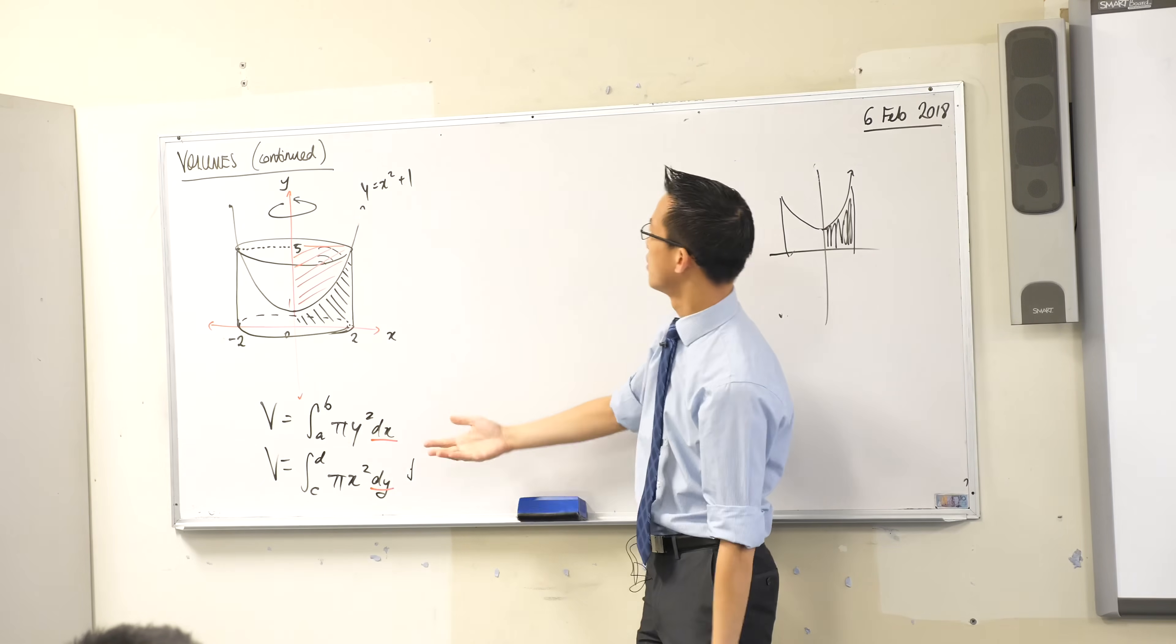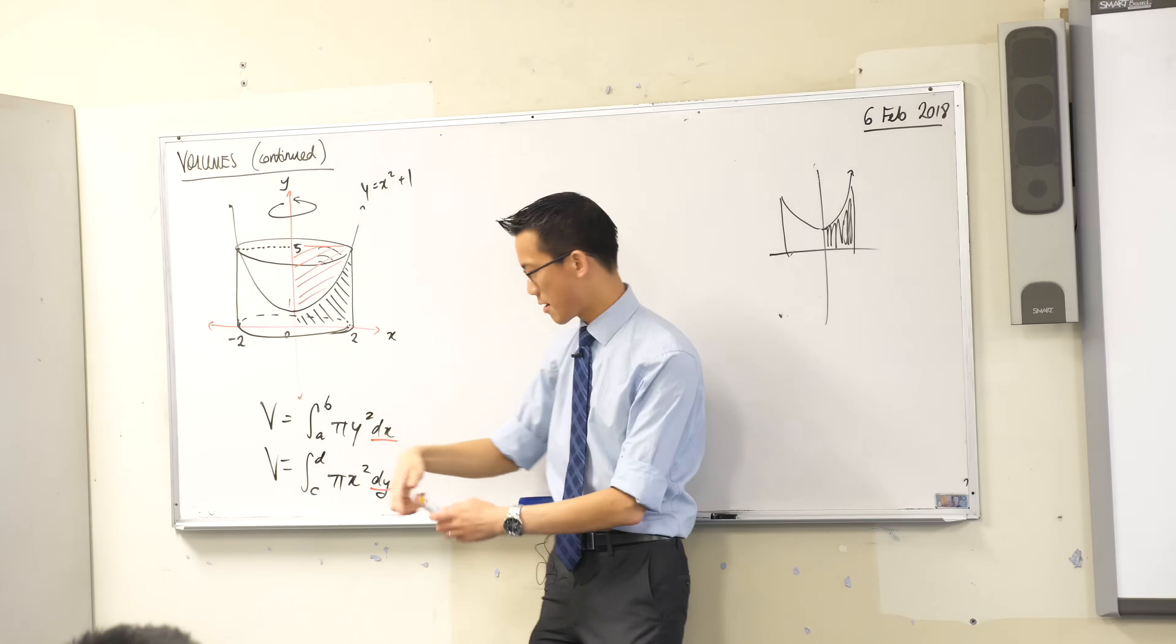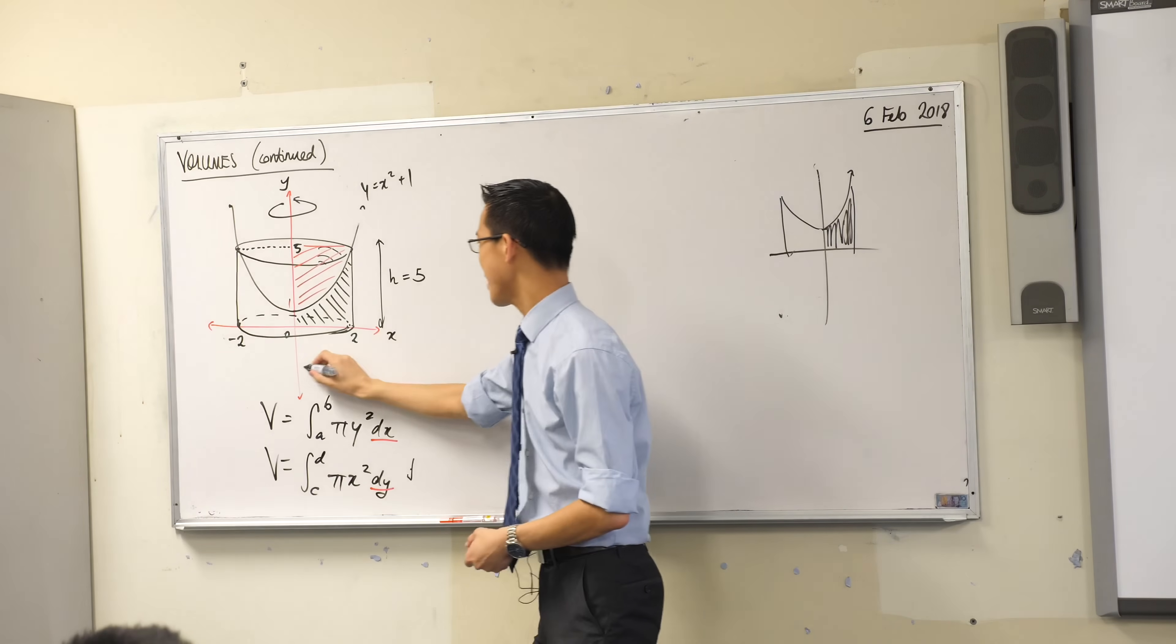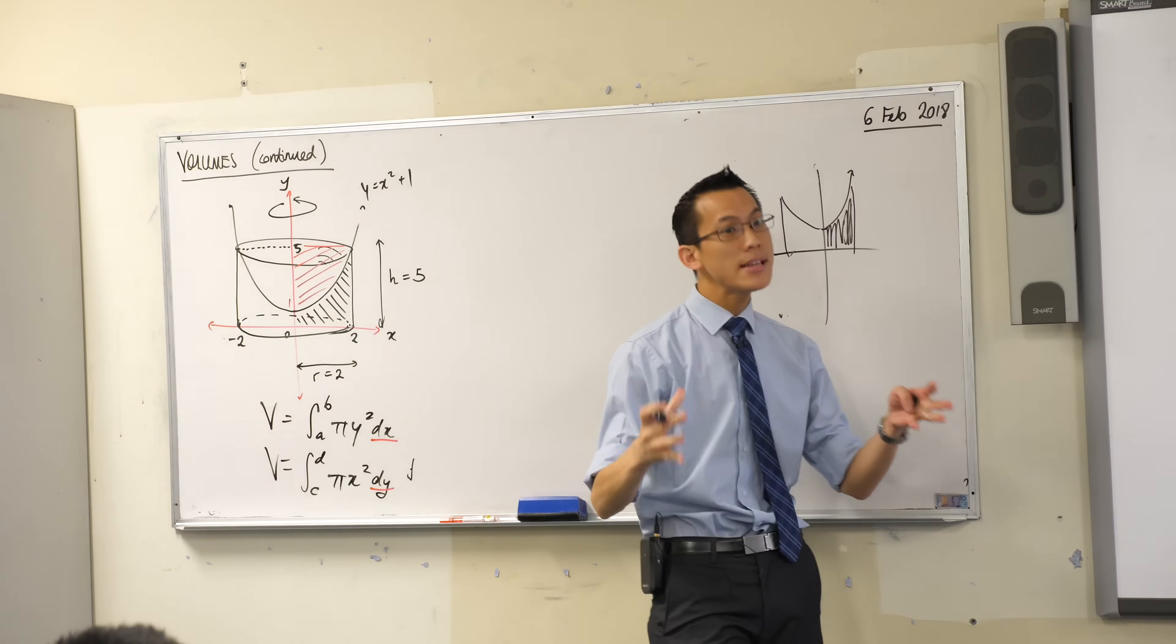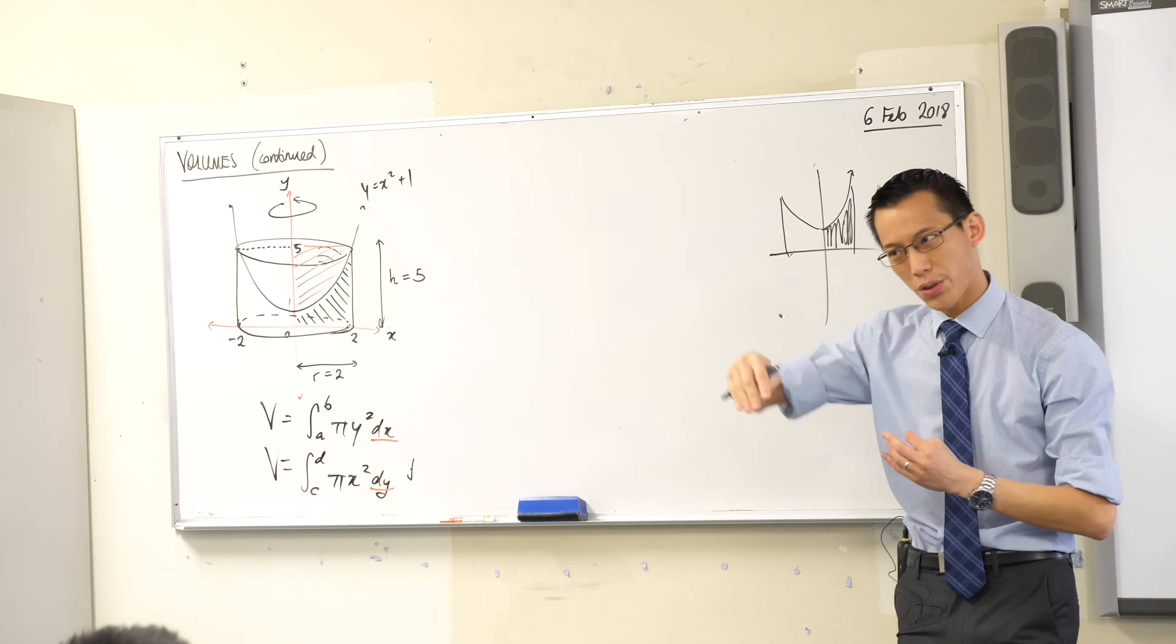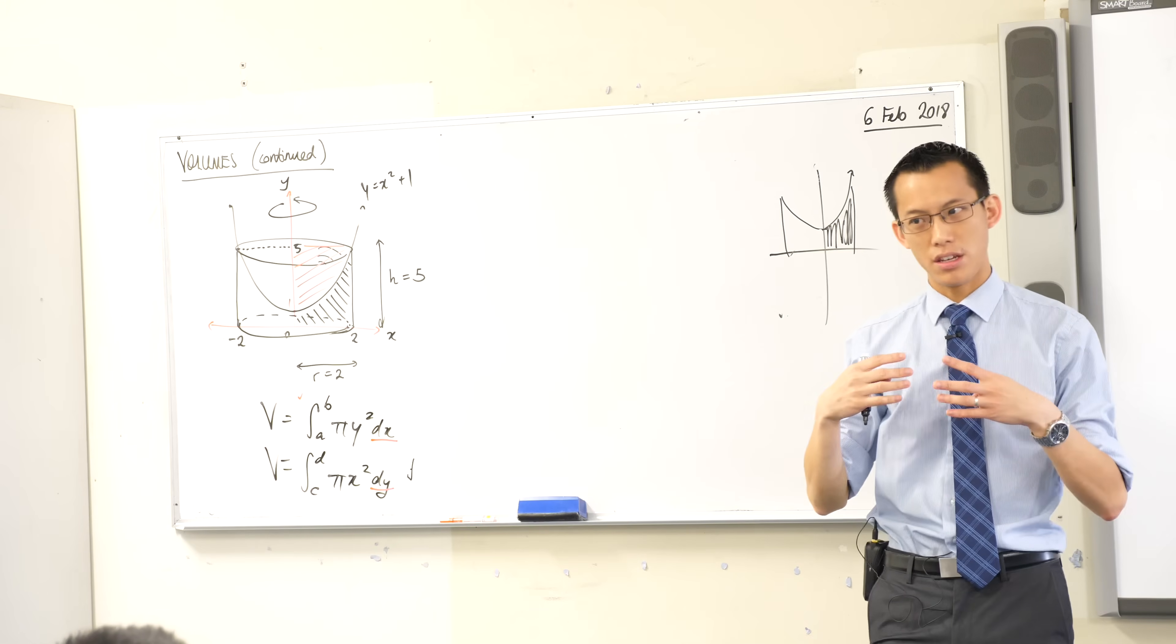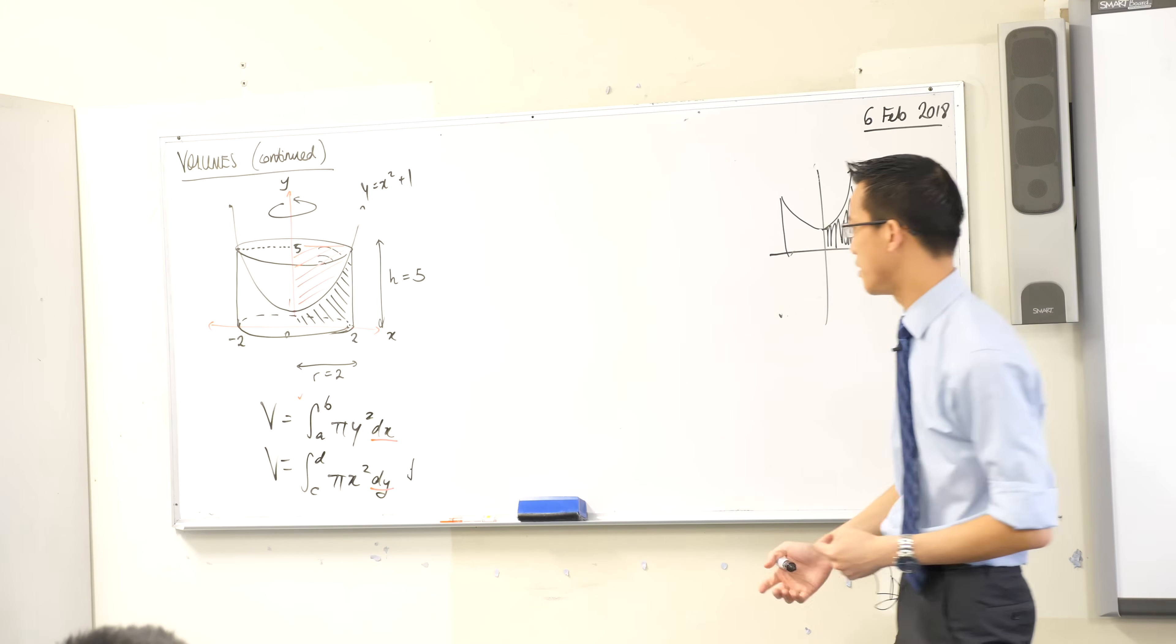This height is equal to five and this radius is equal to two. There's a big cylinder which is the outside of the shape and then as it were, we sort of dig out, we carve out this inside bit, the curvy bit, right? So all I'm doing is actually taking the difference of two volumes, the difference of two volumes. I know how to do that.